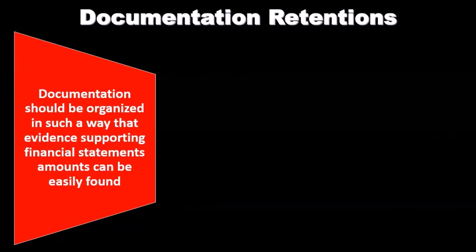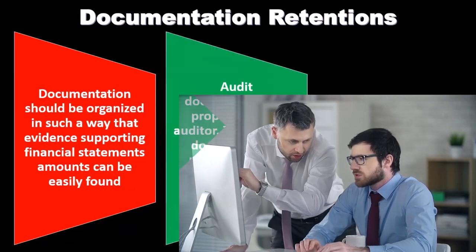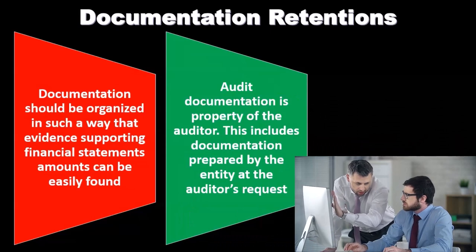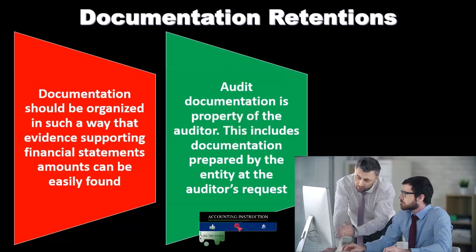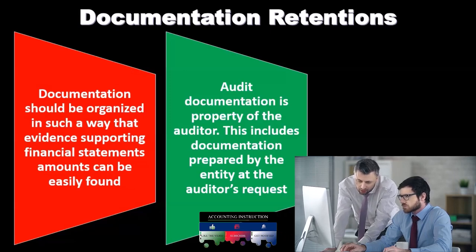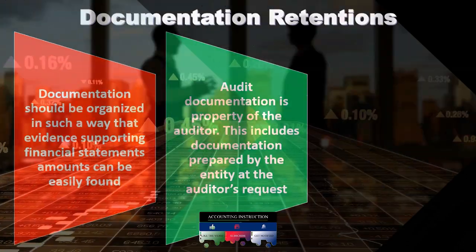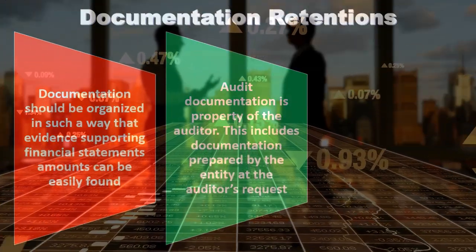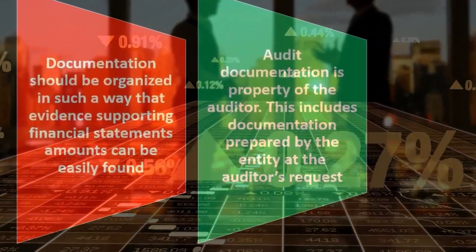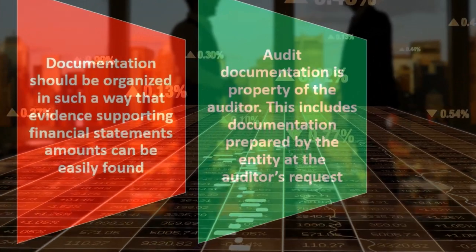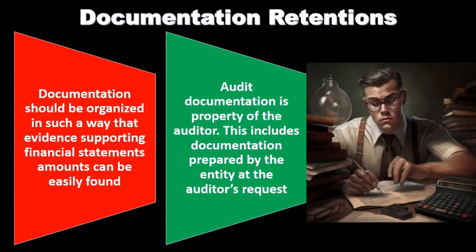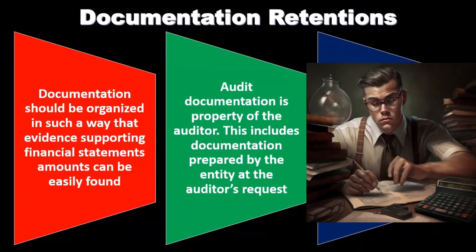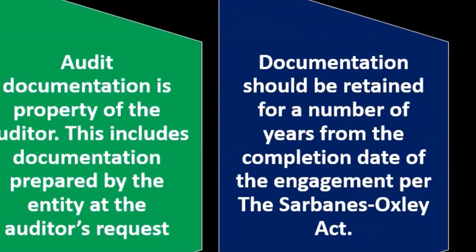Part of the organization comes from how we cross-reference and use tick marks within the documentation. Audit documentation is property of the auditor — this includes documentation prepared by the entity at the auditor's request. Although the working papers are about the company being audited, the working papers themselves are part of the audit and are not the property of the company. This includes any calculations that we ask from the company as part of the audit process. Documentation should be retained for a number of years from the completion date of the engagement, per the Sarbanes-Oxley Act.